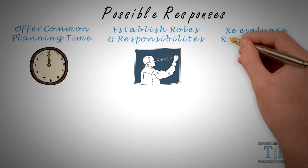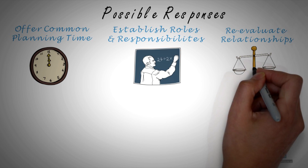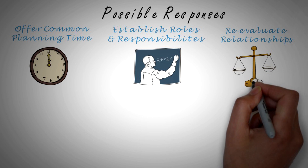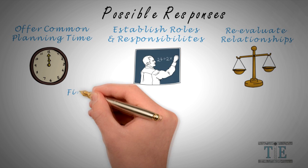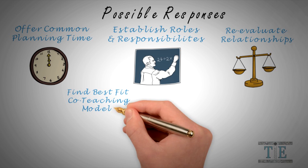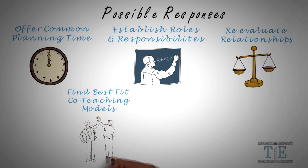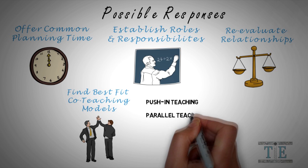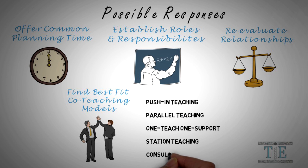Third, re-evaluate relationships as time moves on. Working relationships often start off well, but as time goes on new problems come about, so always re-evaluate relationships to address new issues. And lastly, find the best-fit co-teaching model for special education and general education teachers. There are many different models for co-teaching. When choosing a model, think of both the teacher's strengths and weaknesses, and always look for what's best for the students.